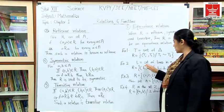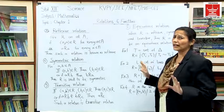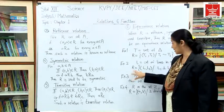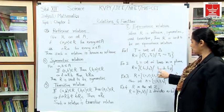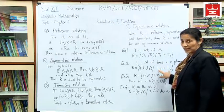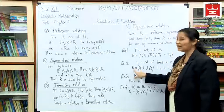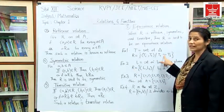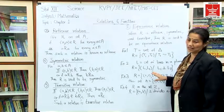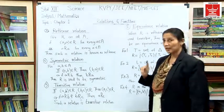Now we will see Example 2. Here L stands for the set of all lines in a plane. The relation R is defined as follows: we consider two lines, and if those two lines are perpendicular to each other they are related. So the relation here is perpendicularity between lines, similar to how similarity was the relation for triangles. Now we will check whether it is reflexive.